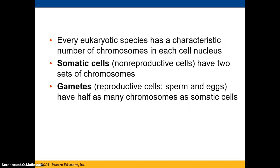Somatic cells, which are non-reproductive or body cells, have two sets of chromosomes — one from the mother and one from the father. Gametes are our reproductive cells, our sperm and eggs, and they have half as many chromosomes. That way, half plus half gives a whole, so after fertilization they would have one complete set of chromosomes.